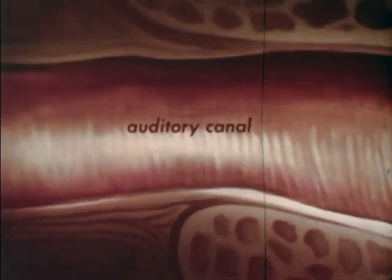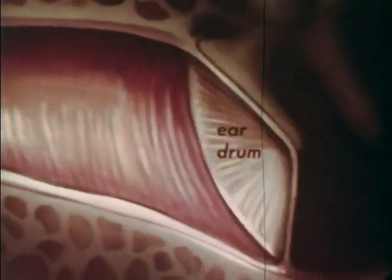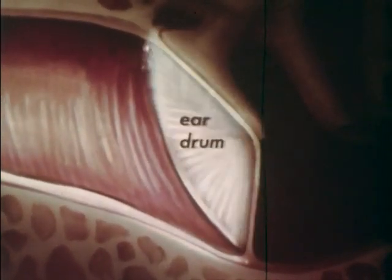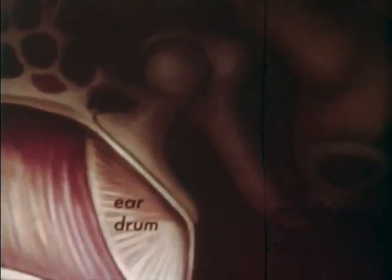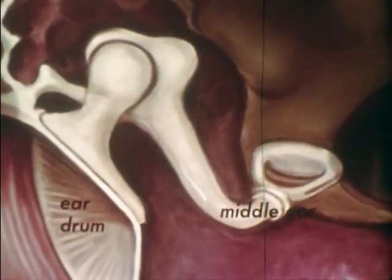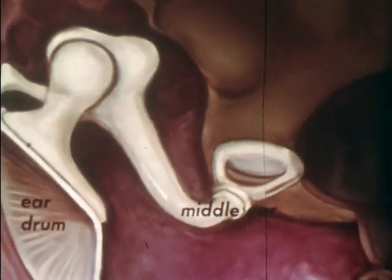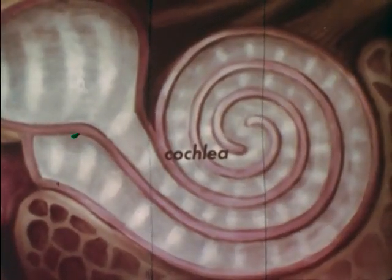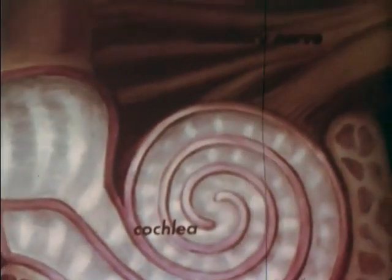The outer ear catches the sound waves and directs them along the auditory canal, where they bombard the eardrum, setting up vibrations that are passed on to three tiny bones in the middle ear: the hammer, the anvil, and the stirrup. With increased force, the sound waves enter the compressed fluid of the inner ear, called the cochlea, where sounds are received and transformed into nerve impulses racing to the brain.